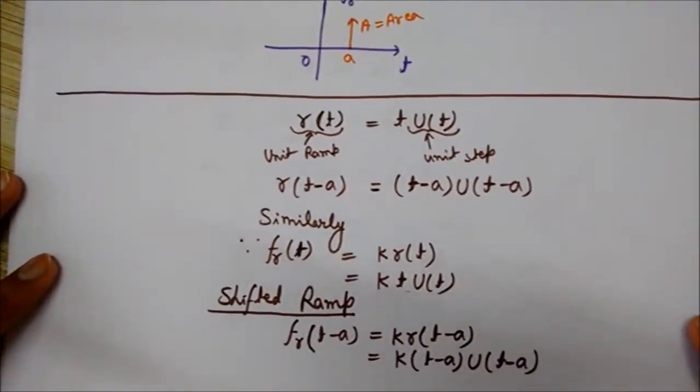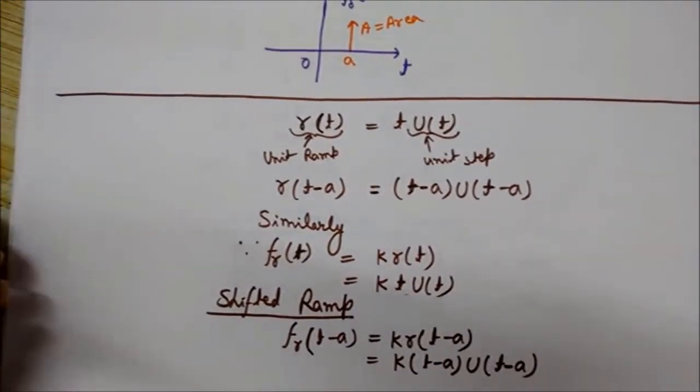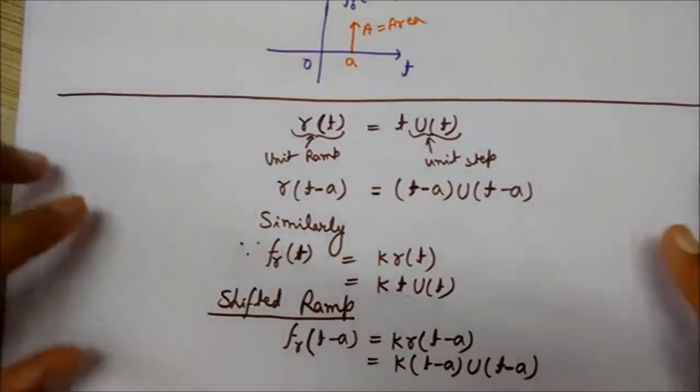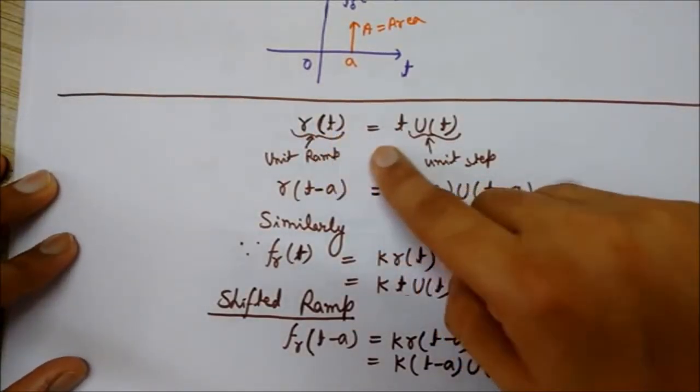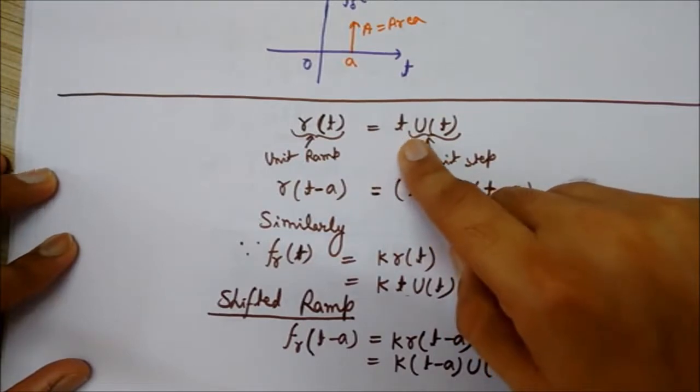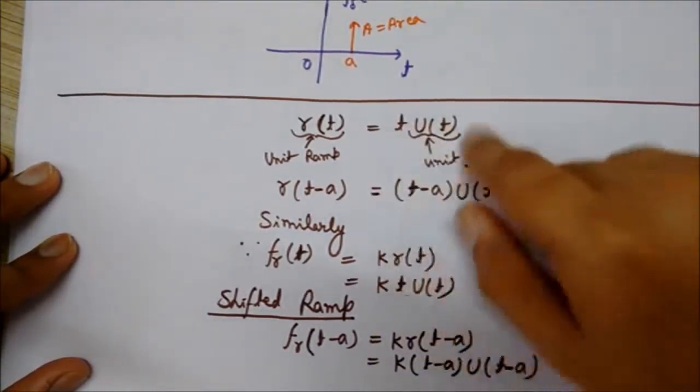You can see here this is the unit ramp signal. This unit ramp signal r(t) can be written as t*u(t). These are some interesting and useful results.